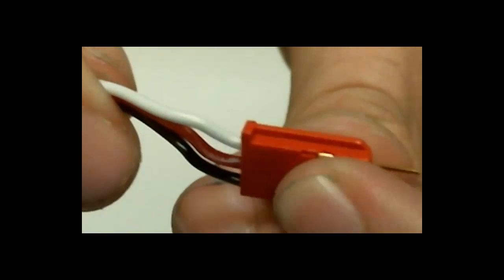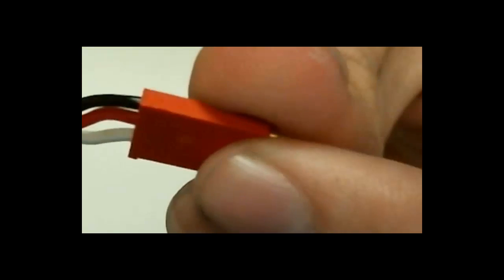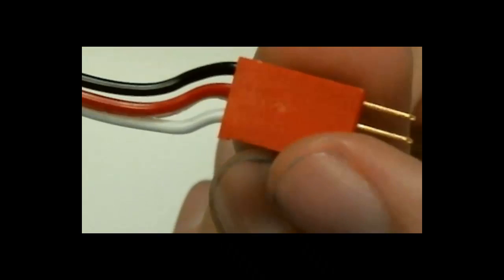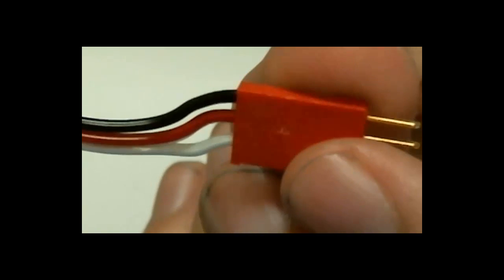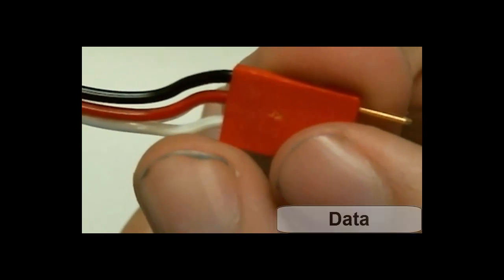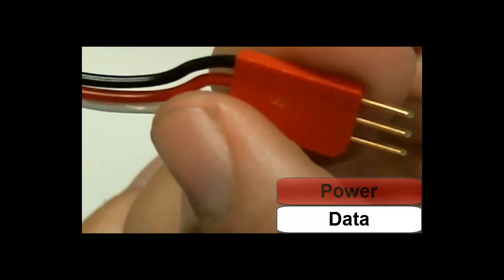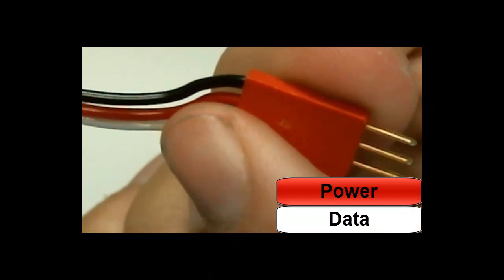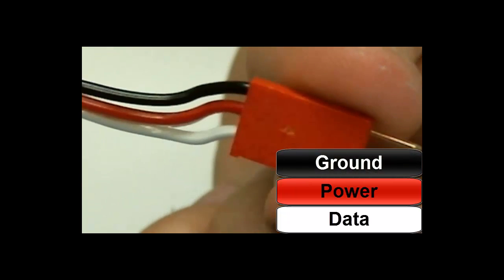Alright, so a limit switch comes with this standard three prong PWM cable. It has three different color wires that all do different things. This white one on the bottom sends data back to your robot. The red one in the center is your power. And the black one on top is your ground.